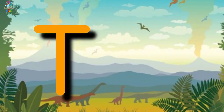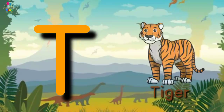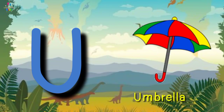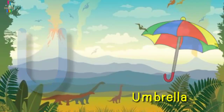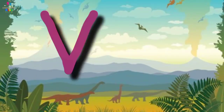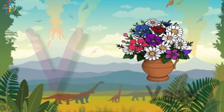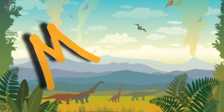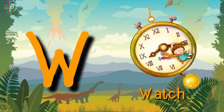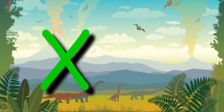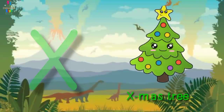T for tiger, U for umbrella, V for vase, W for watch, X for Xmas tree,